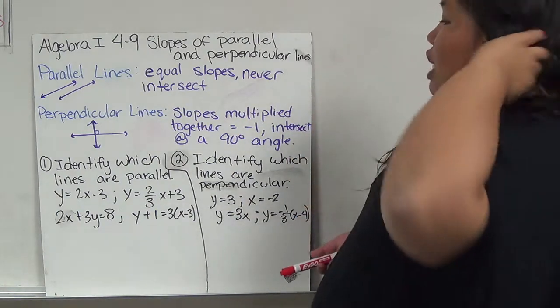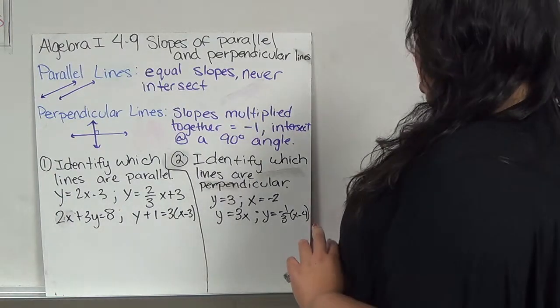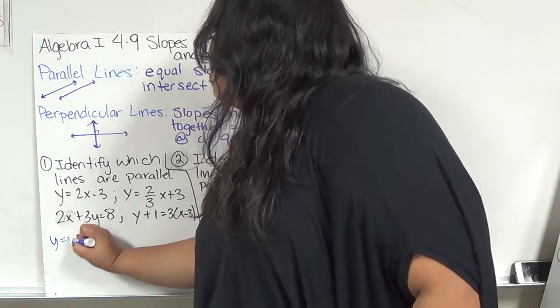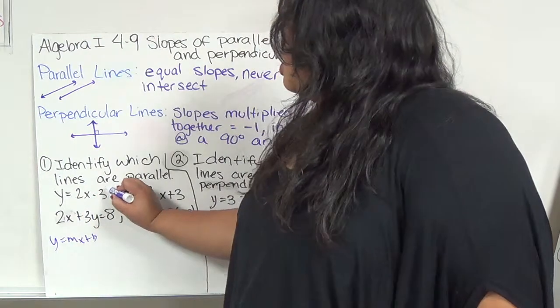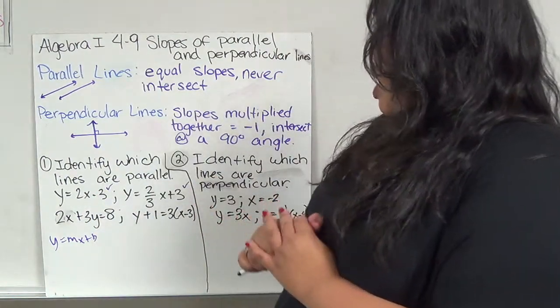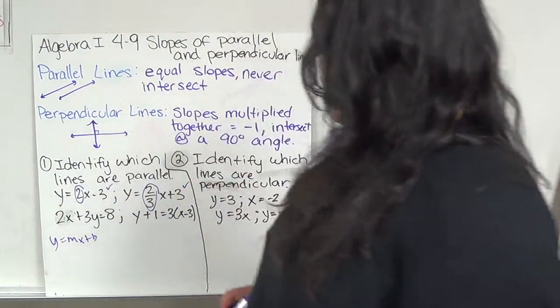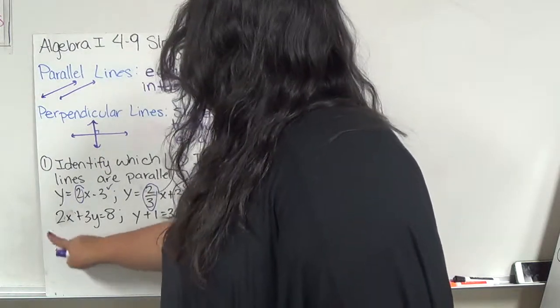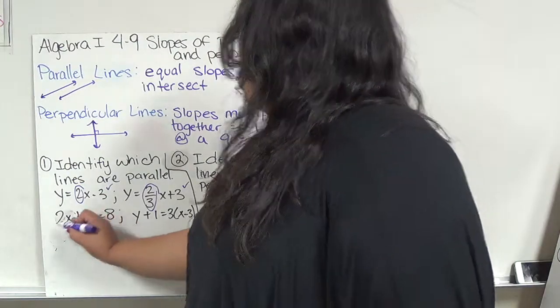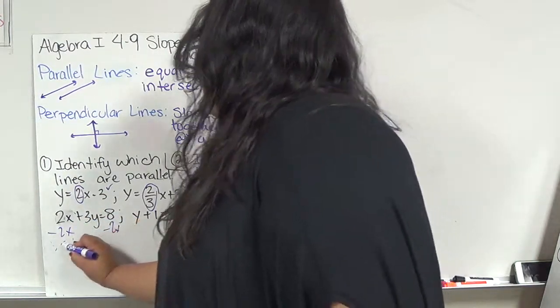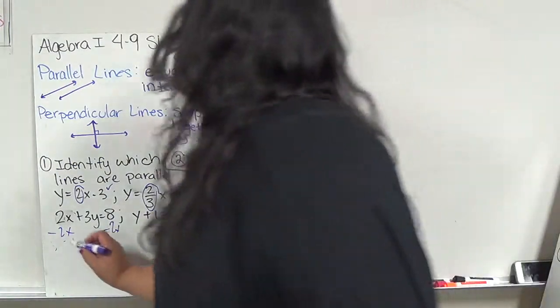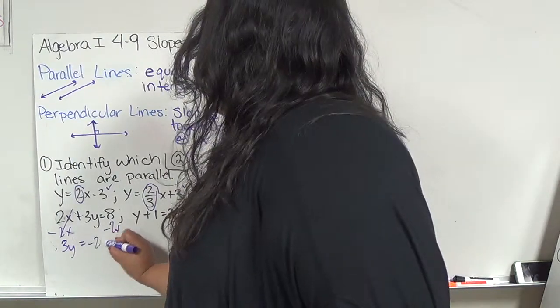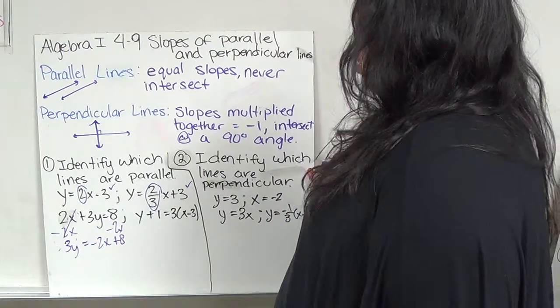Number 1 wants us to identify which lines are parallel. In order to do that, we need to make sure it's in the y equals mx plus b form. This is already in y equals mx plus b form, and this is our slope. Let me change this one: 2x plus 3y equals 8. I want to move 2x to the other side because I'm trying to isolate y, making it into y equals mx plus b form.